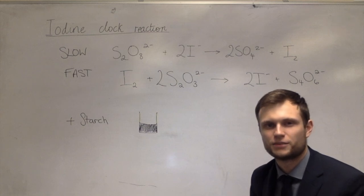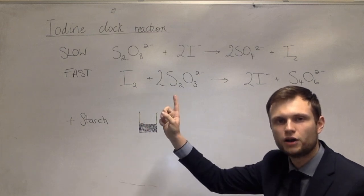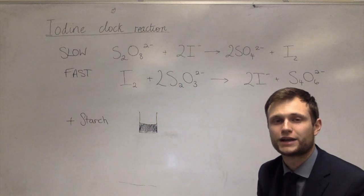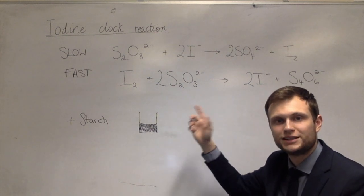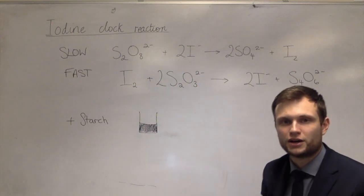The reason the reaction is set up this way is because if we know exactly how much thiosulfate we put into the reaction, we can work out via stoichiometry how much iodine has been made and how much iodide has been used and how much peroxidised sulfate has been used.